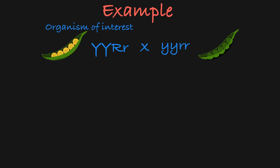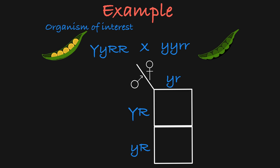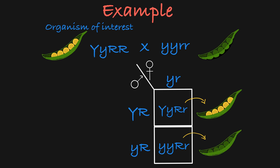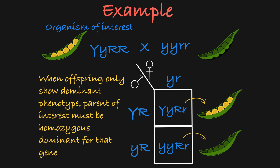Similarly, if your parent of interest has this genotype, then it can produce these two different gametes. As such, the offspring can either have this genotype or this genotype. So we will see offspring that have both dominant phenotypes — yellow peas in a round pod — and offspring that have the recessive green pea color and the dominant round pod shape. The fact that we see both phenotypes for the pea color tells us the parent is heterozygous for that gene. And because we only see the dominant pod shape phenotype in the offspring, we know the parent of interest is homozygous for that gene.